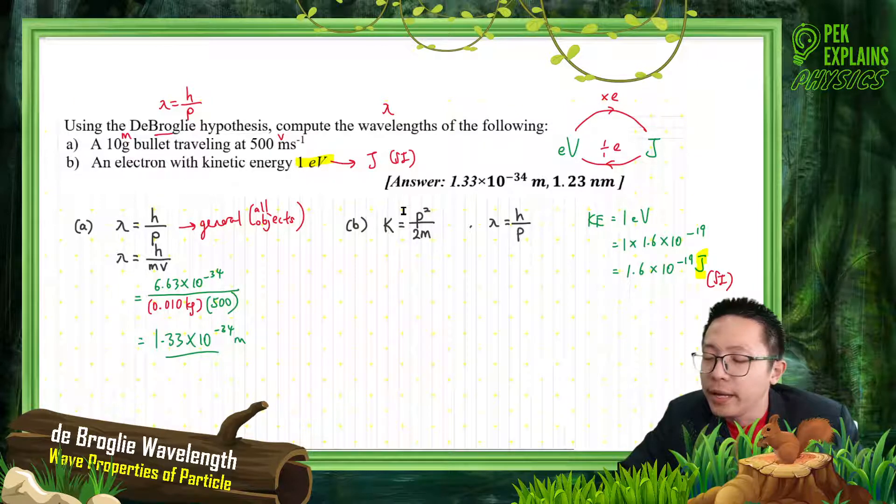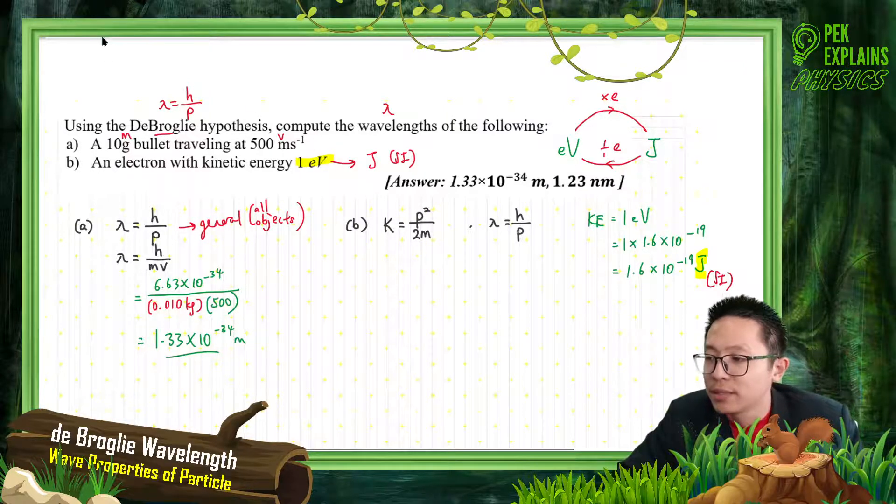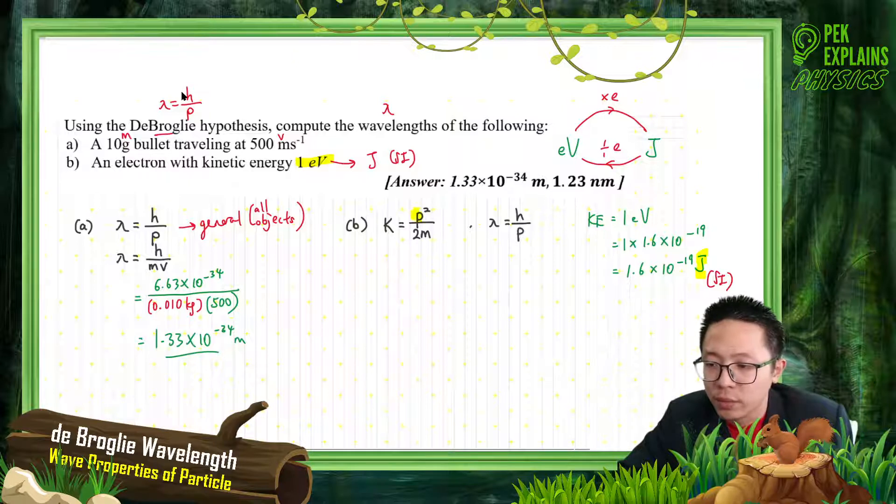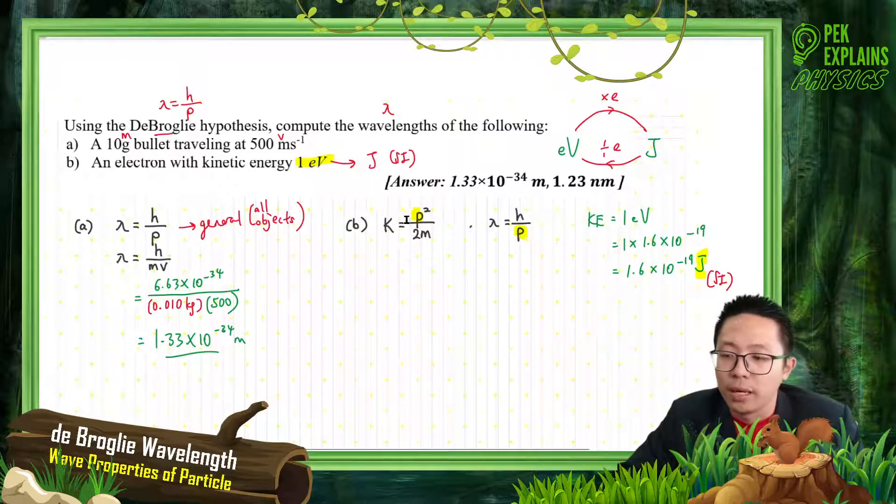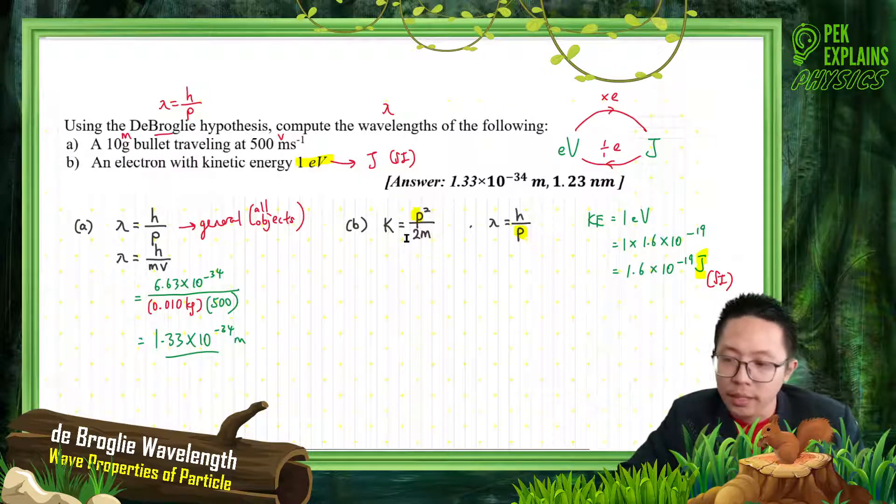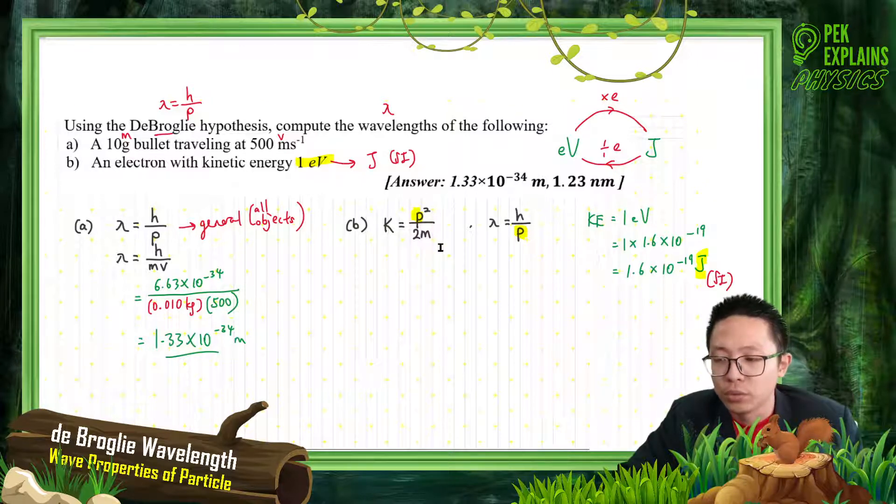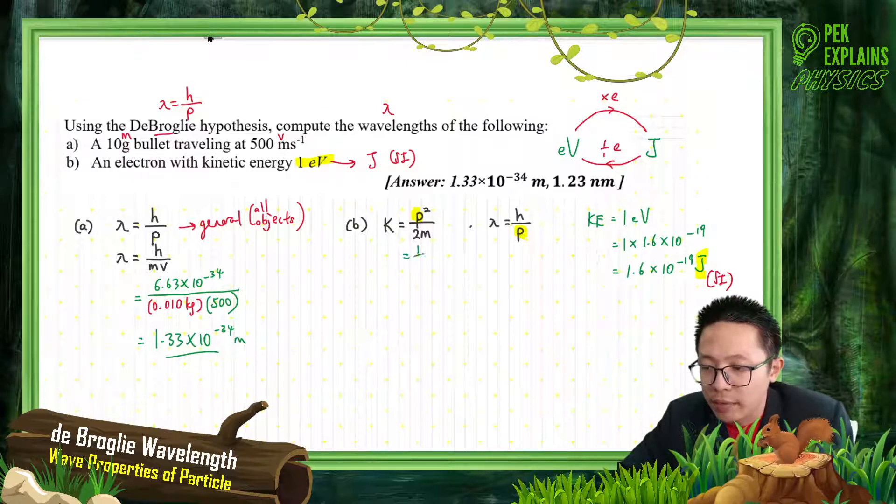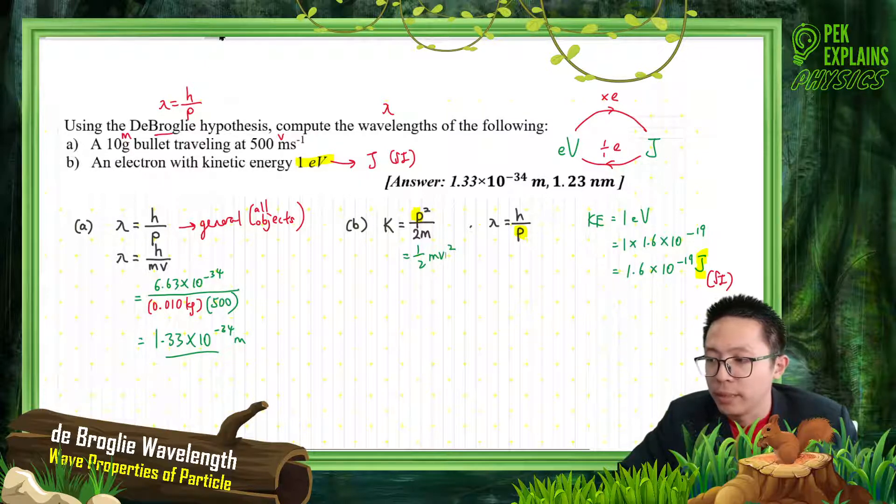I told you already - to relate kinetic energy to the wavelength, one simple thing is you just relate them with the momentum. You also can use half mv squared. You first find the velocity, and then from velocity you also can find wavelength. Here I just use the one with momentum. Kinetic energy is momentum squared over 2m. It's the same as half mv squared. Look at my lecture video how I convert half mv squared to momentum squared over 2m.